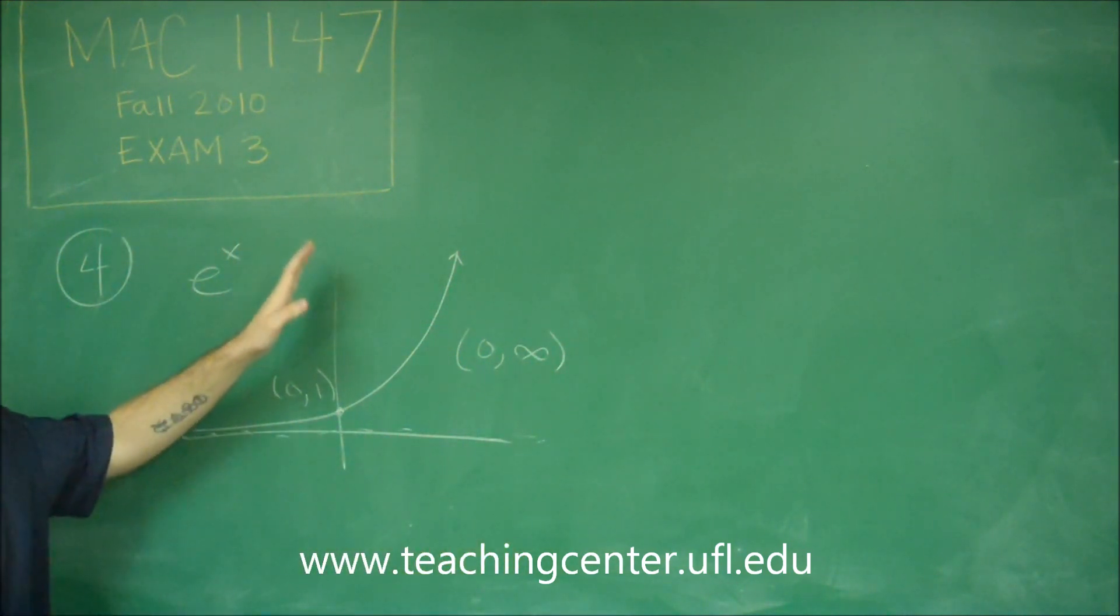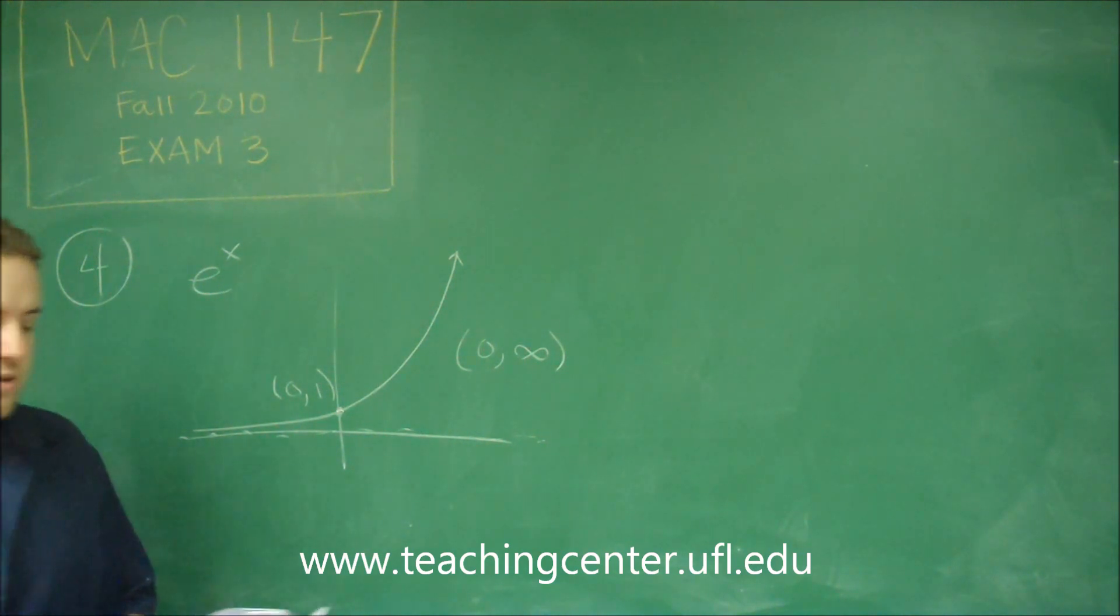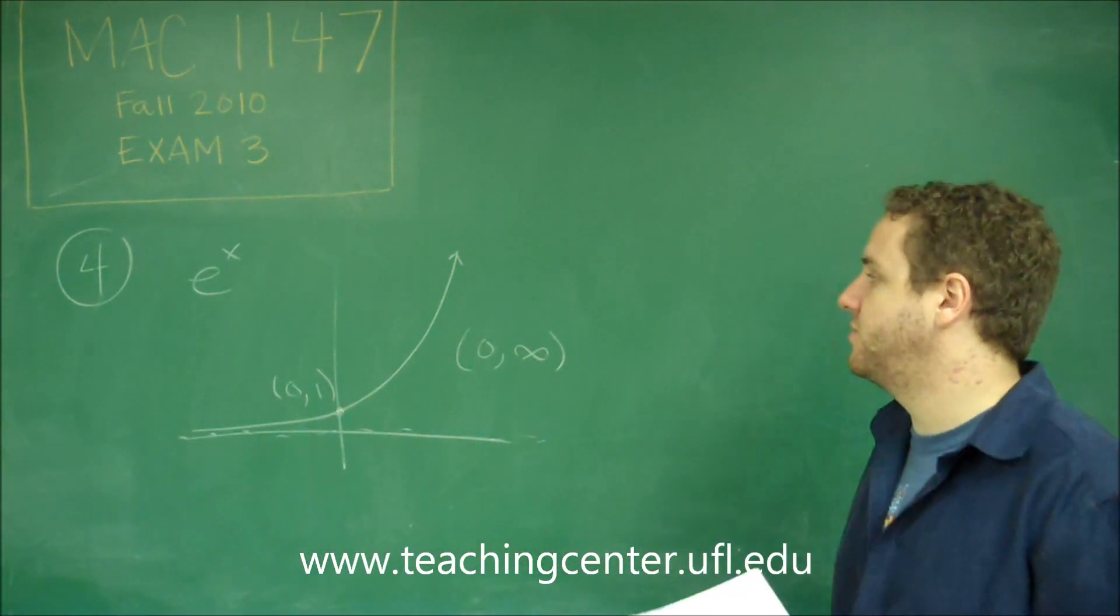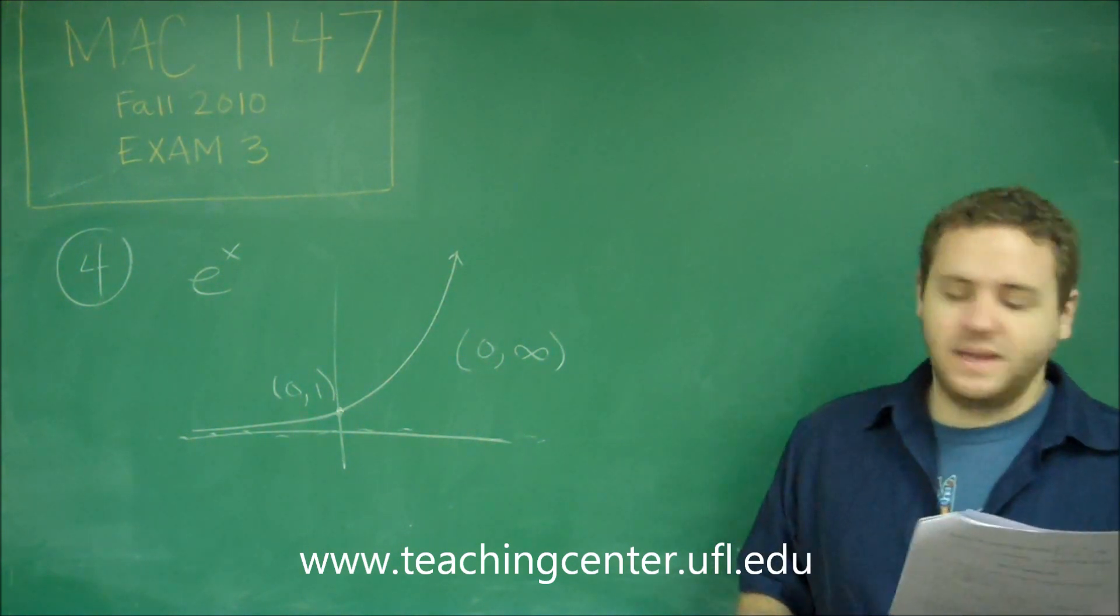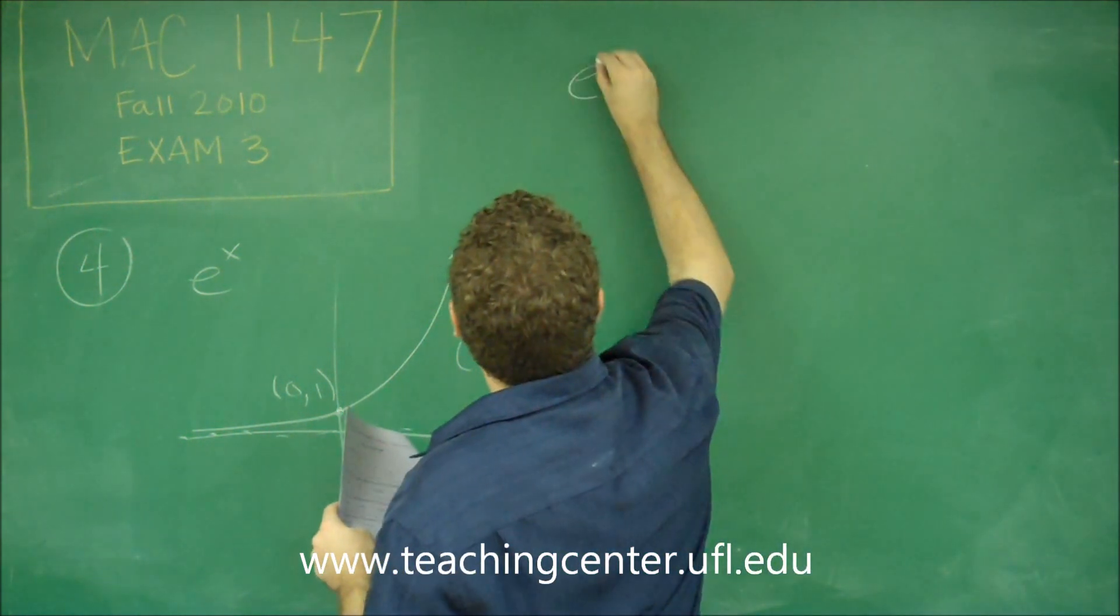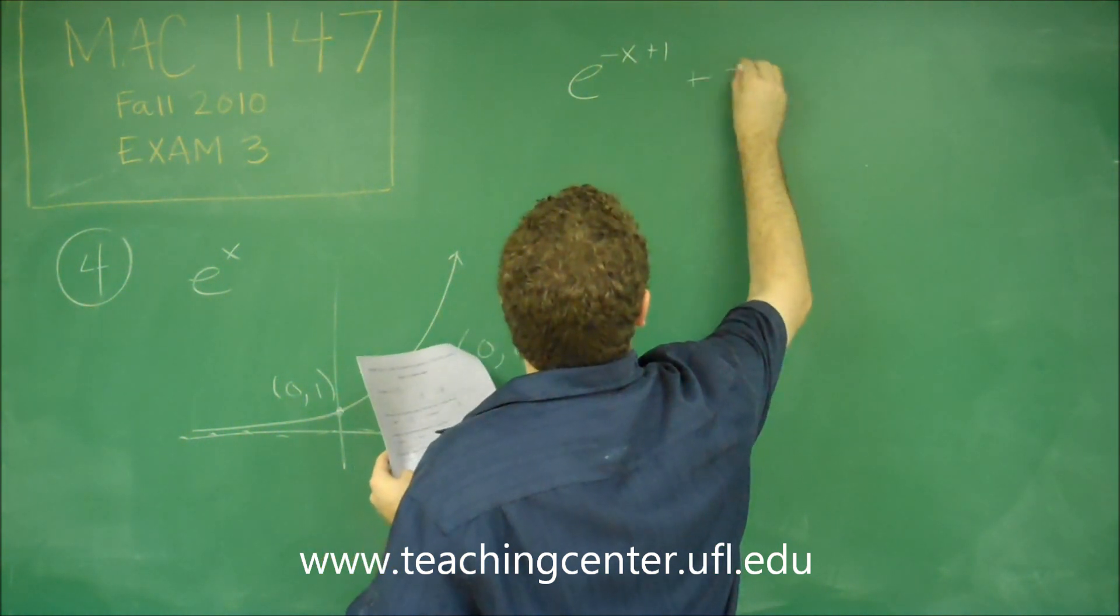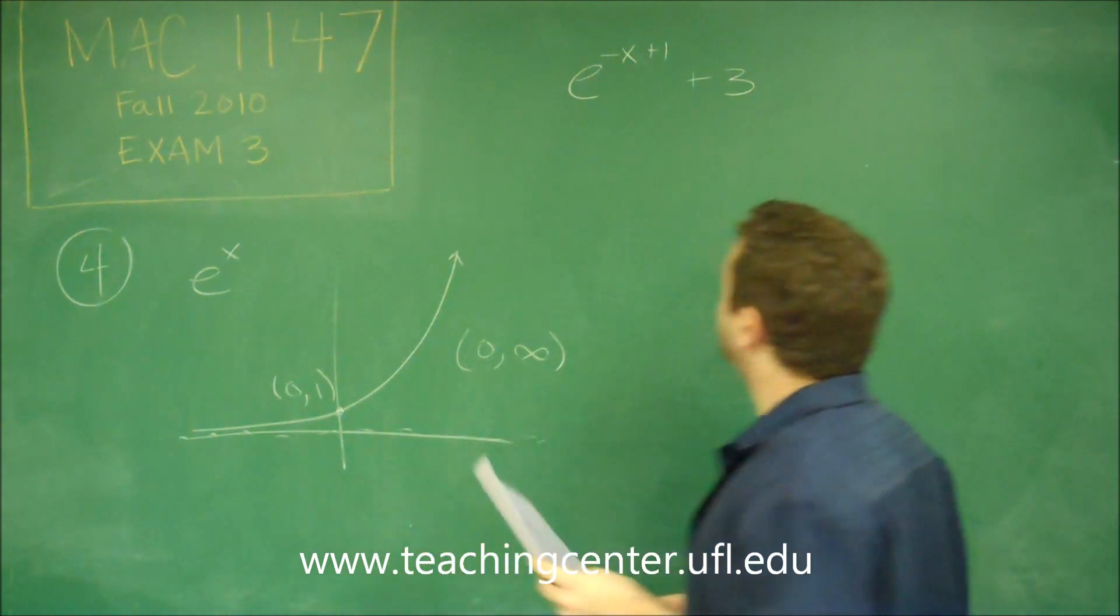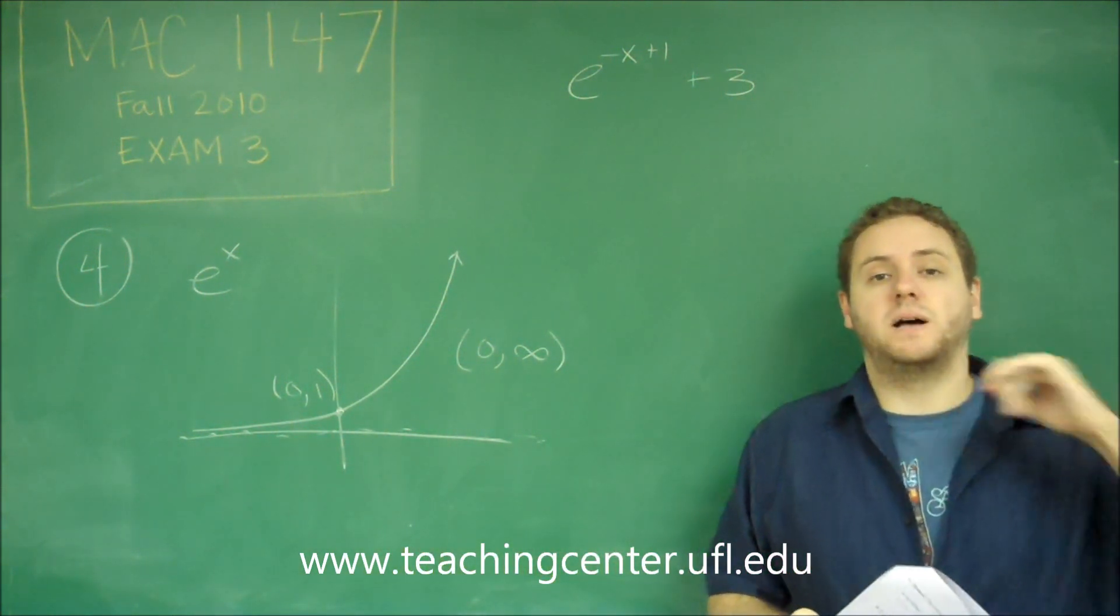Because you can only get positive values, you can't have 0, and it goes up to infinity. So let's think about what we have here. We have an exponential function, but we've done some transformations to it. So we have e to the negative x plus 1 plus 3. What's important to note here is you're trying to find the range.